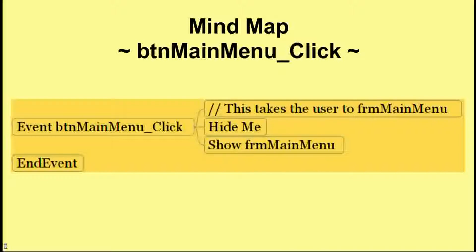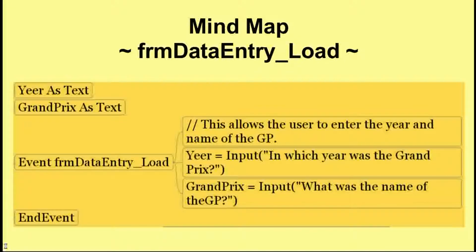Those are fairly easy. Now we come on to those that require a little more explanation. We're going to look at the event form data entry load — this happens when the data entry form actually loads. You can see that outside of this procedure there are two variables being defined: 'yeer' (which appears misspelt) and 'Grand Prix'. If you define variables within an event, those variables are only visible there. We would like year and Grand Prix to be visible in several different events, so we define them outside. That's scope.